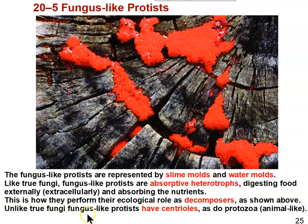Unlike true fungi, fungus-like protists have centrioles, as do protozoa — the animal-like protists — as do animals. This is why we're studying them alongside the animal-like protists, the protozoa, and it's also what makes them somewhat animal-like, as opposed to the plant-like protists, which are the algae.